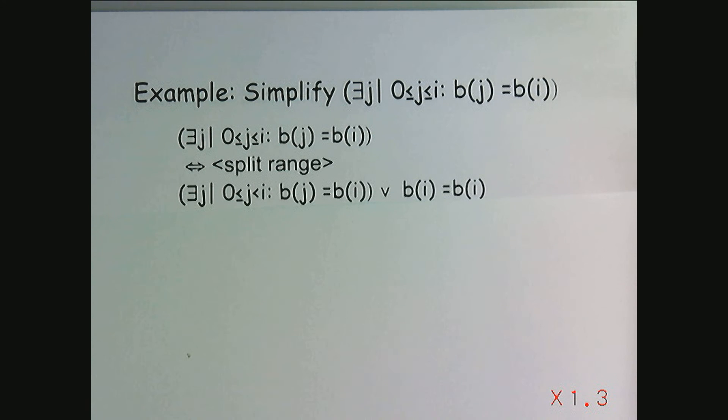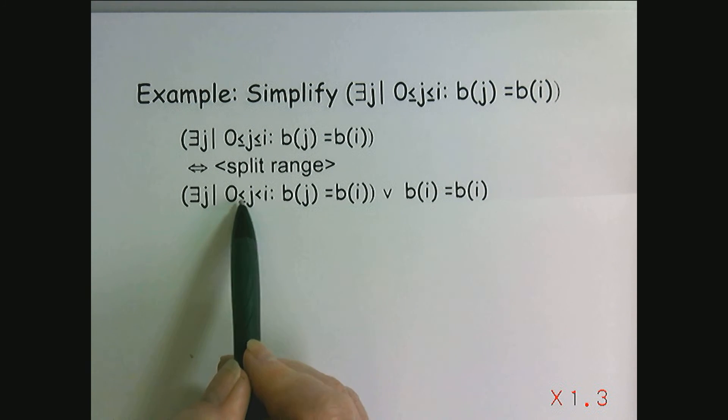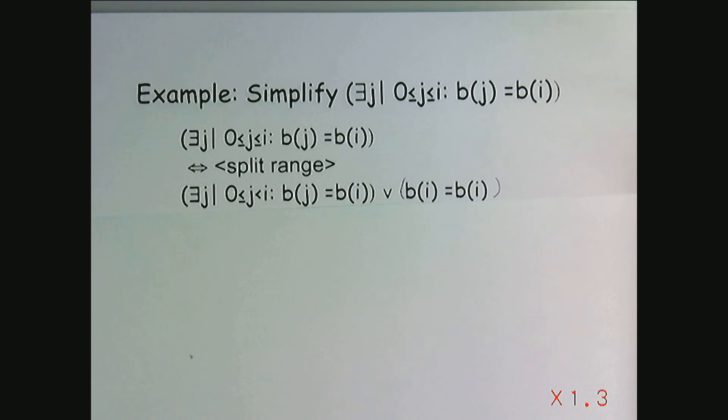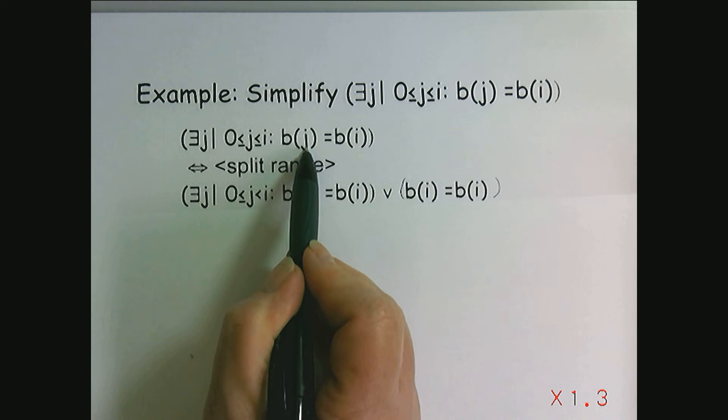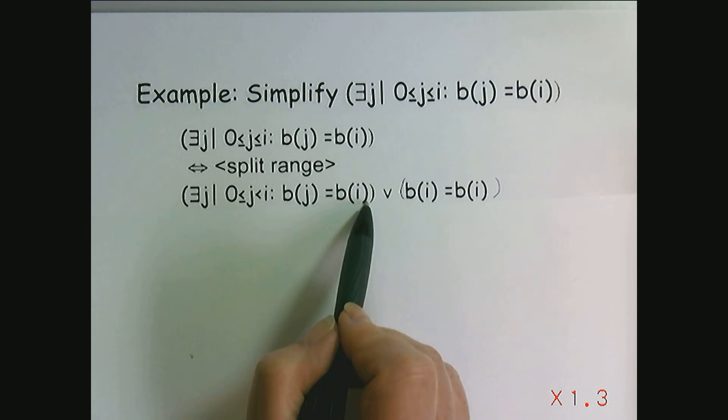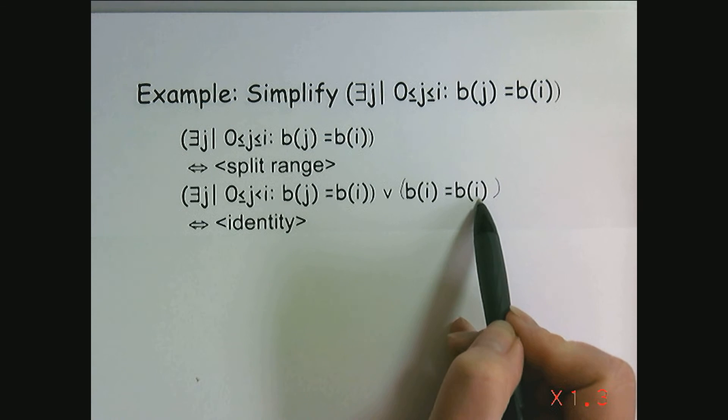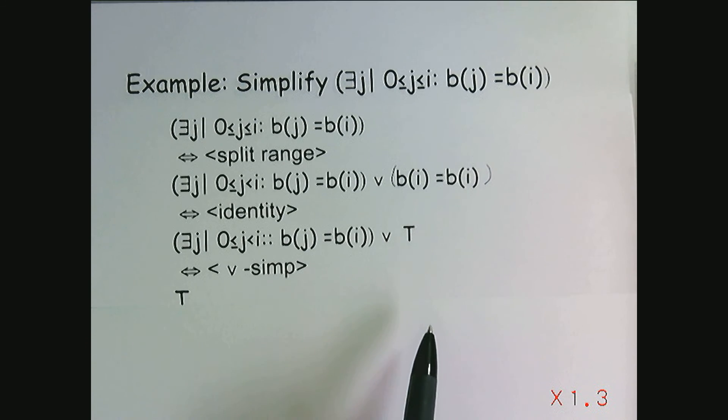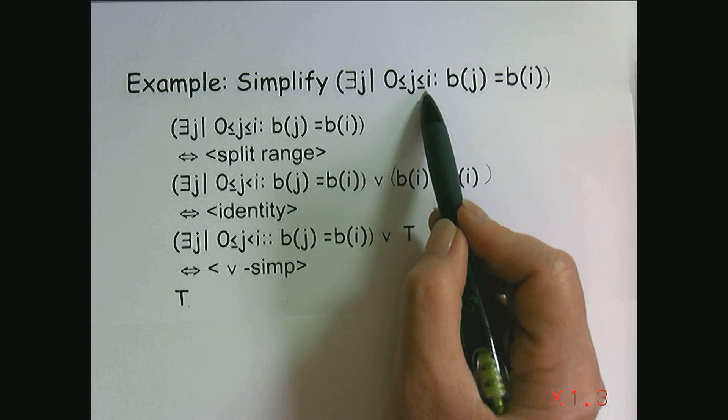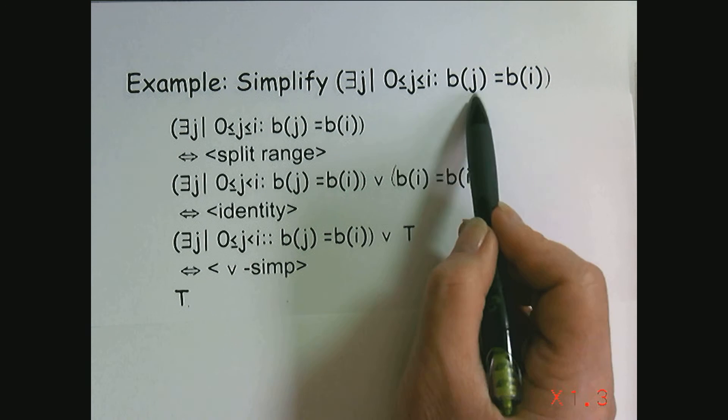In this case, splitting the range will yield, there exists a J, J between zero and now I minus one, including I minus one, or I could just say less than I, which means we stop at I minus one, such that BJ is equal to BI or BI is equal to BI. Where did I get this? Well, the term that I split off was where J is equal to I. And so substituting an I for J, I get BI is equal to BI. That's where that came from. And I'm left with the previous values in the array in this sub-expression. But notice BI is equal to BI, so this is true. And any expression, or true, is always true by or simplification. So this was easy to simplify. It is true, because at least one of the values in this array is equal to BI, because BI is equal to itself.